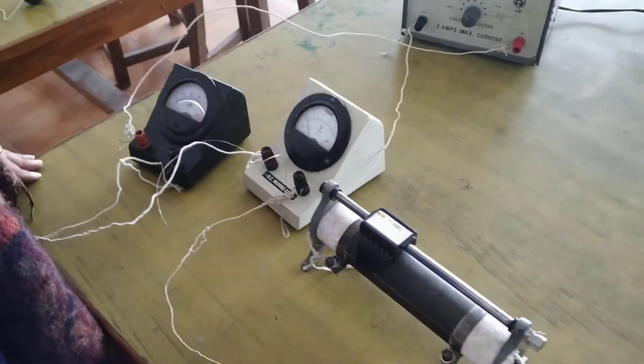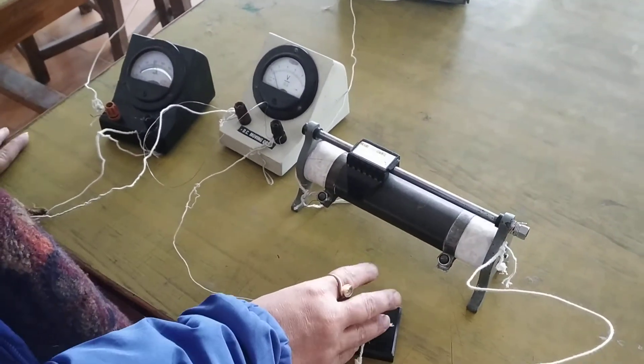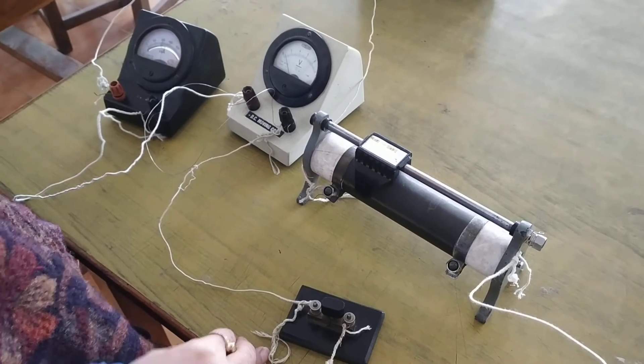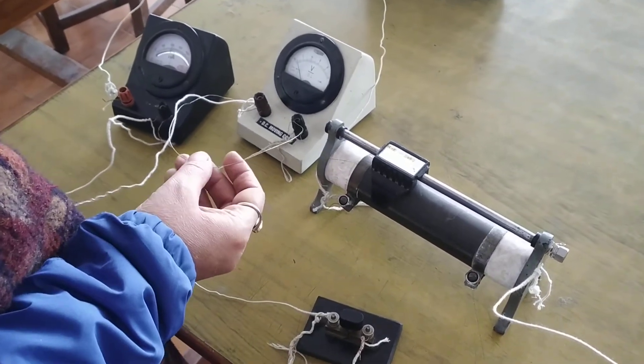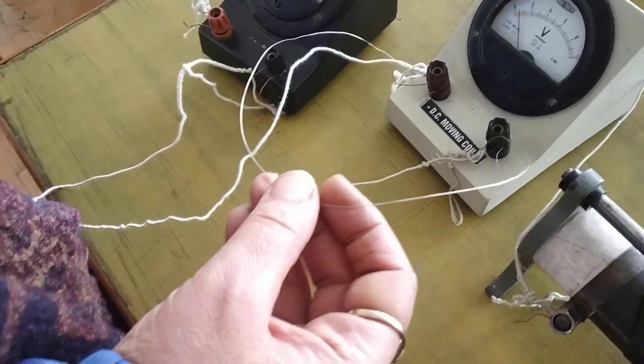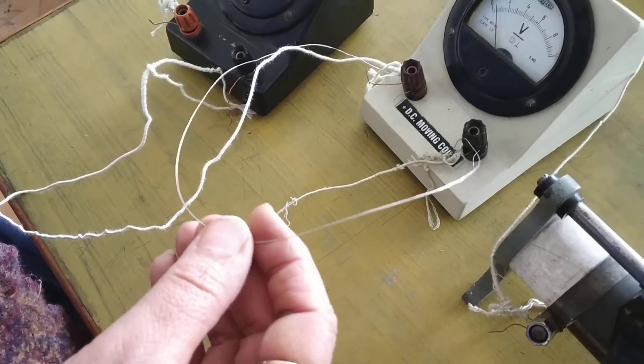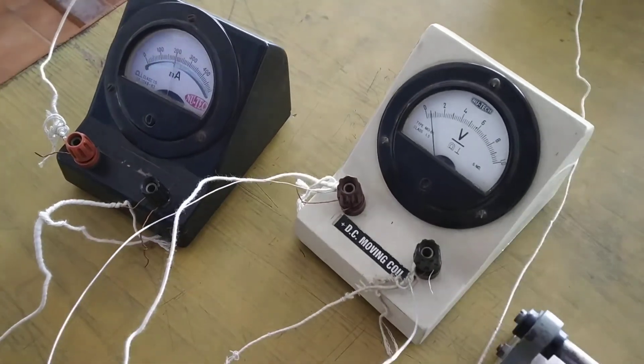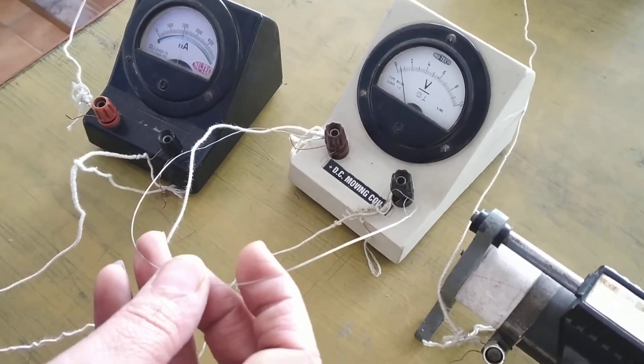We should not pass current for too long because the value of resistance changes. If a very large current flows through the wire, the resistance of the wire changes as a result of the temperature increase. Due to Joule's heating effect, the temperature rises and hence the resistance changes.